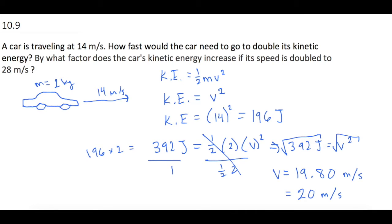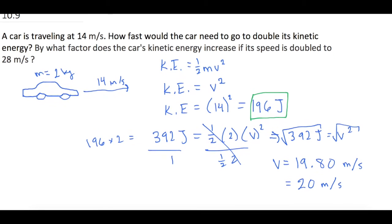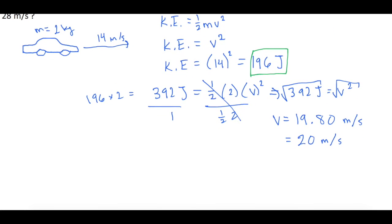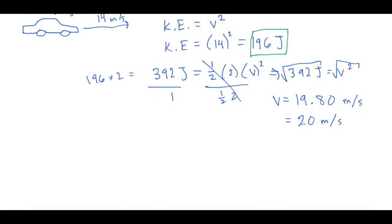Okay. So now for part B. Part B says, by what factor does the car's kinetic energy increase if its speed is doubled to 28 meters per second? Okay. So we know that we have 196 joules to deal with to start out. So let's figure out how much kinetic energy we have at 28 meters per second.